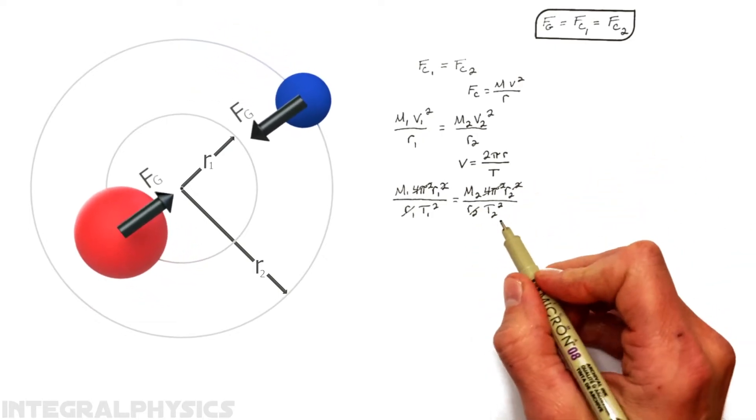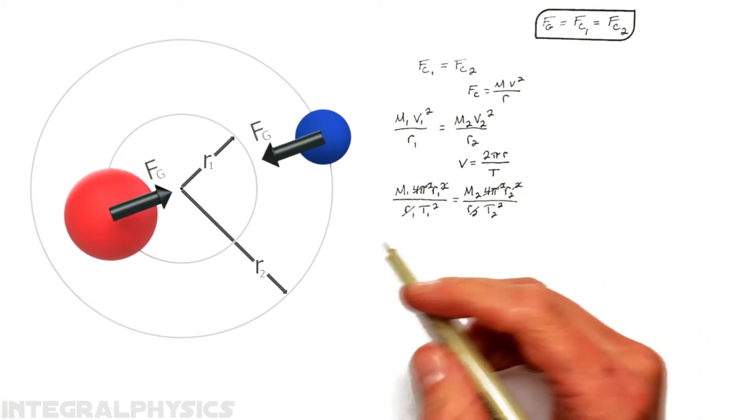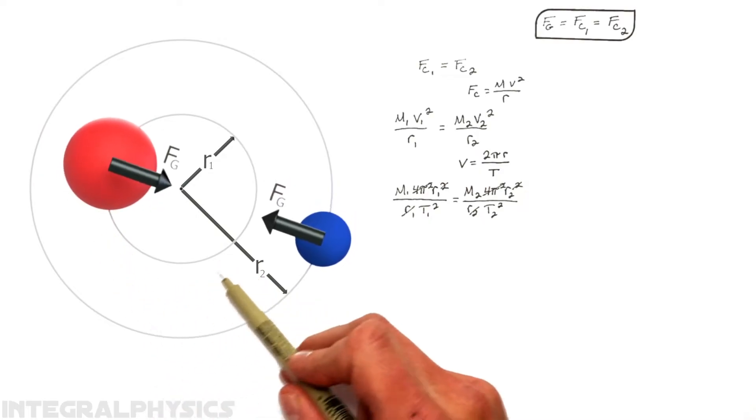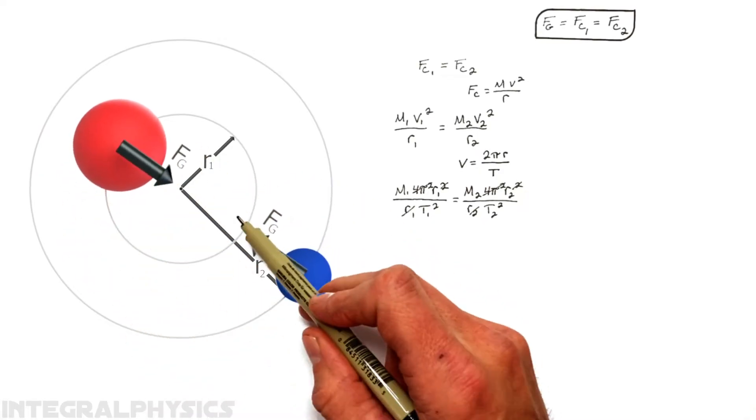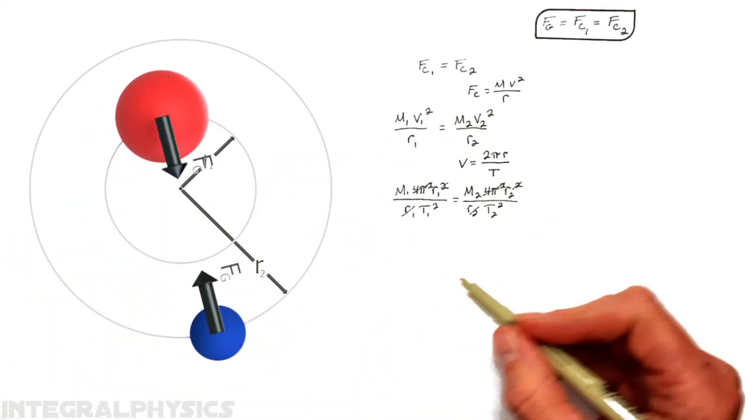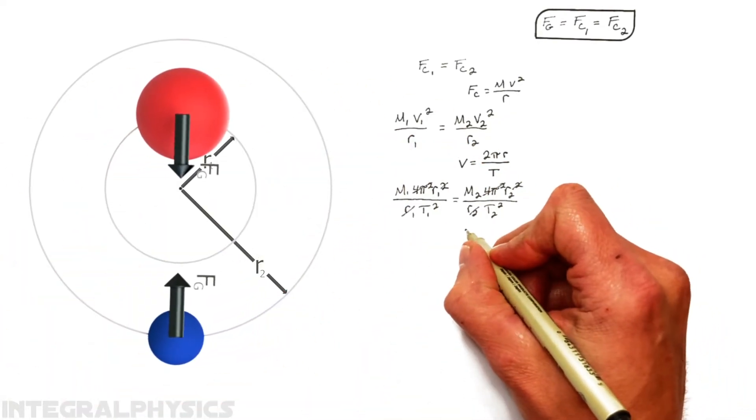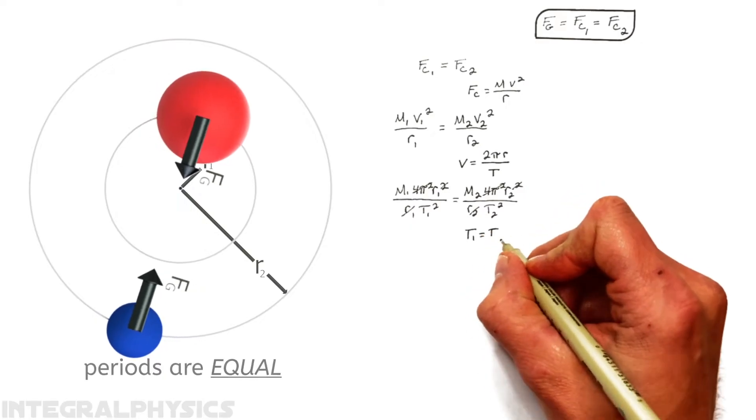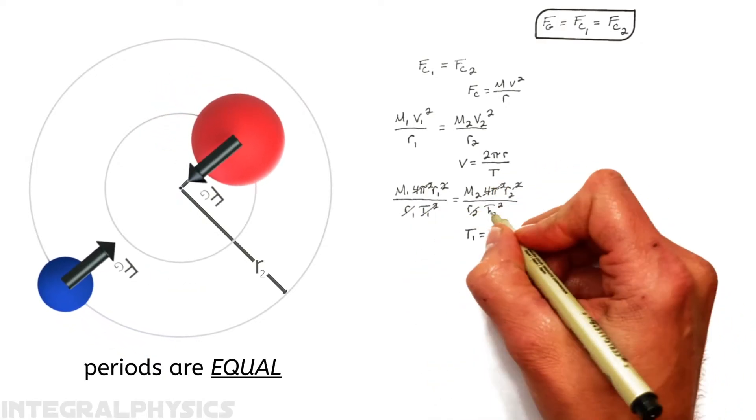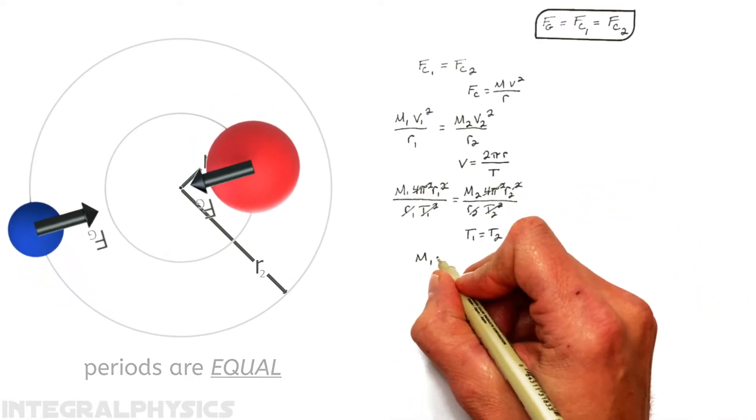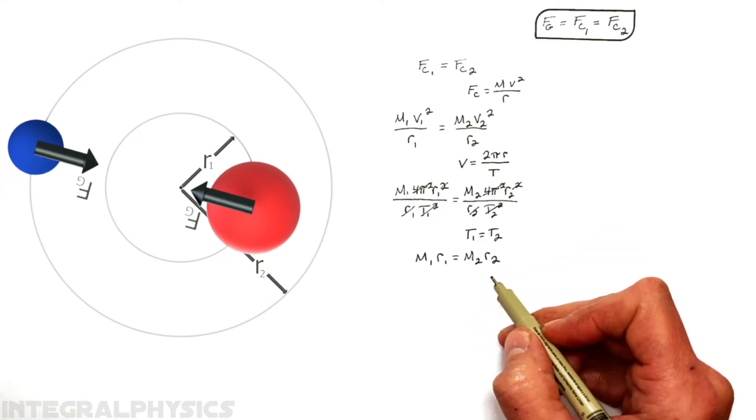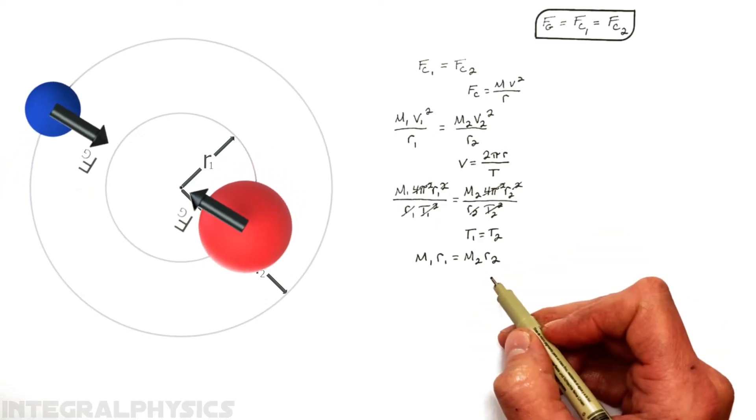And there's one more thing that's going to cancel out here, and that goes back to a really important idea of what's going on in a binary system. And that is that if it takes a certain amount of time for this inner mass to move around once, it's going to take the same amount of time for that outer mass to orbit once. Or you could say the two periods are equal to one another, meaning these two periods are also going to cancel out. And this leaves us with this equation, which relates the two orbiting masses to their distance from the center of mass.